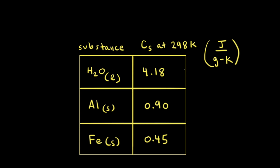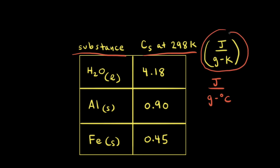Specific heat can vary slightly with temperature, so temperature is often specified in tables. In our table, the left column lists substances and the right column shows specific heats at 298 Kelvin, in units of joules per gram Kelvin. For liquid water the specific heat is 4.18, for solid aluminum it is 0.90, and for solid iron it is 0.45 joules per gram Kelvin.